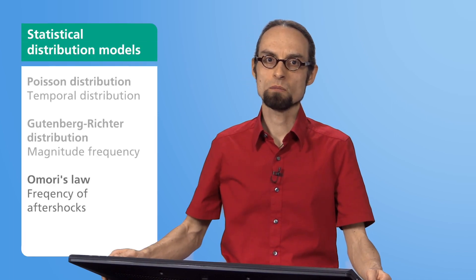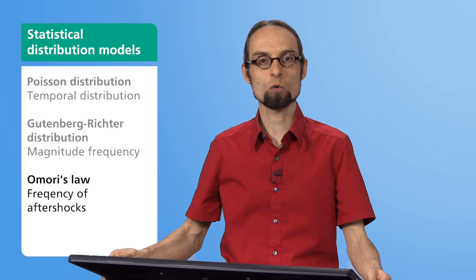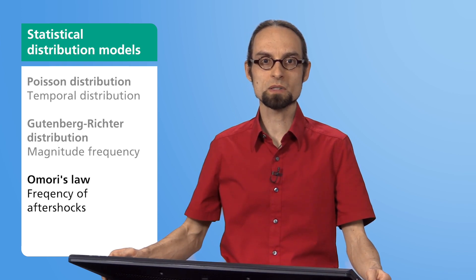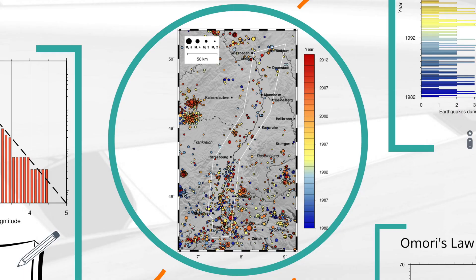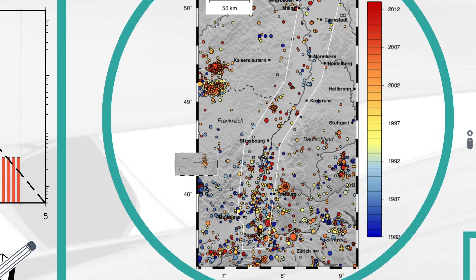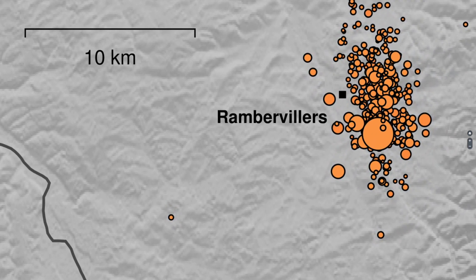The third distribution I would like to introduce to you is Omori's Law. It describes the decrease in the number of aftershocks over time. For this purpose, we will focus on the earthquake of Rambervillers in the Vosges Mountains on February 22, 2003, which had a magnitude of 5.4 and resulted in minor damage to buildings.